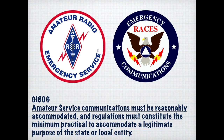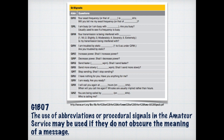Amateur service communications must be reasonably accommodated, and this is particularly true in the case of emergencies. When ARES and RACES appear on the air, we should yield and let them do their thing, because in an emergency our lives could depend on how well they do their job. We also have to send our information in the clear — it can't be obscured, encoded, or encrypted. Some codes that are permissible include Q codes, but we can't just make up our own code and send it; that could land you in a lot of trouble.